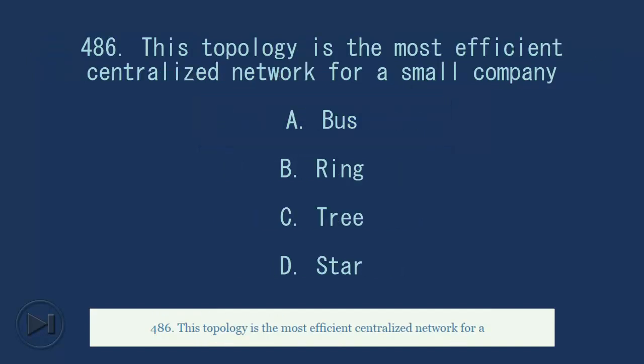486. This topology is the most efficient centralized network for a small company. A. Bus. B. Ring. C. Tree. D. Star. Answer, D. Star.